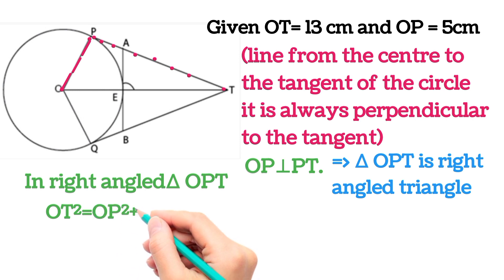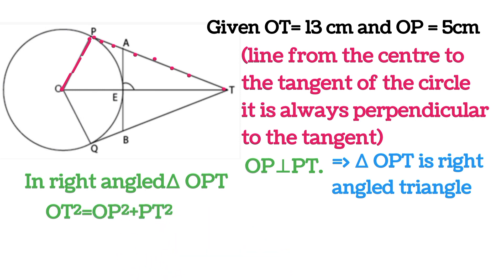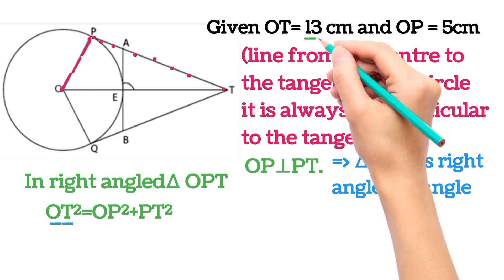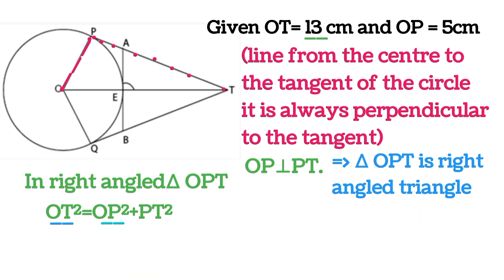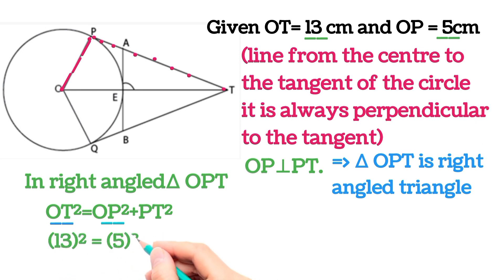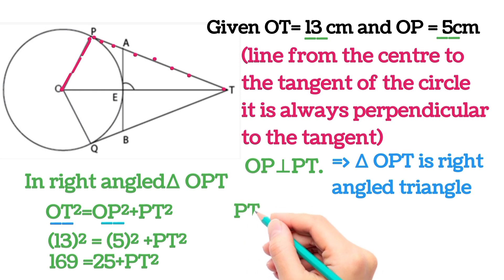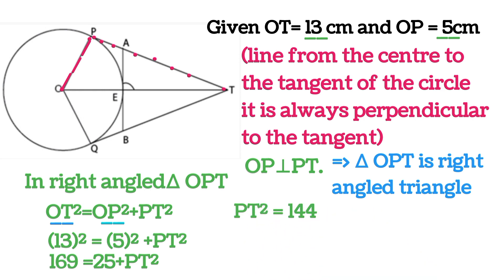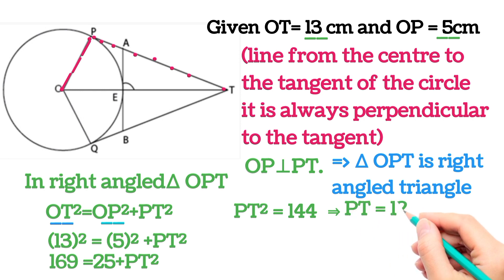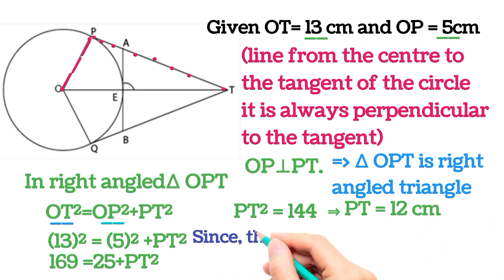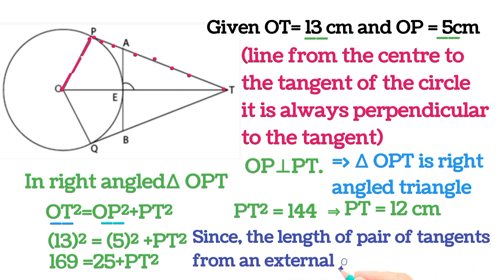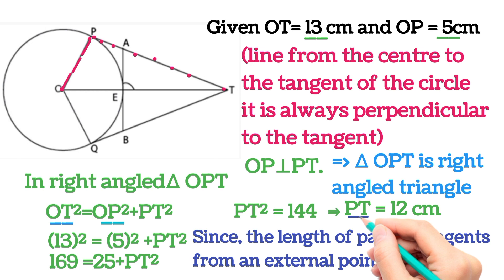In this right triangle, OT² = OP² + PT². OT is 13 centimeters and OP is 5 centimeters. Substituting: 13² = 5² + PT², so 169 = 25 + PT², giving PT² = 144, therefore PT = 12 centimeters.